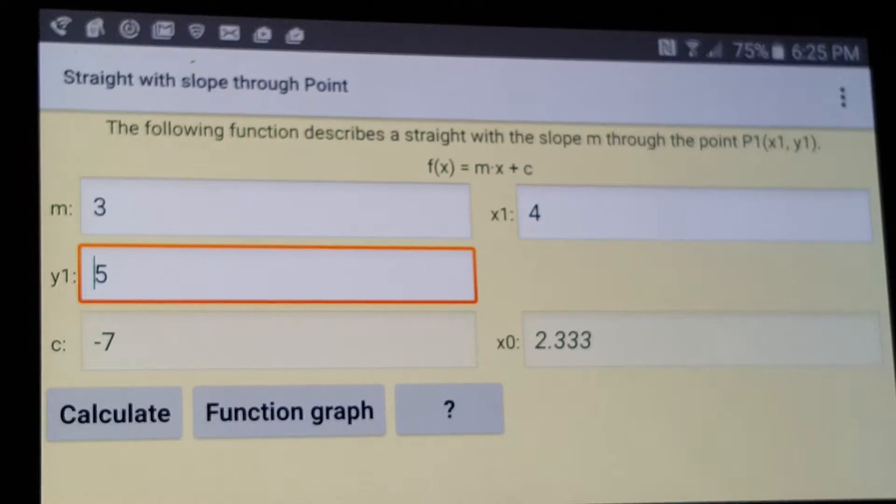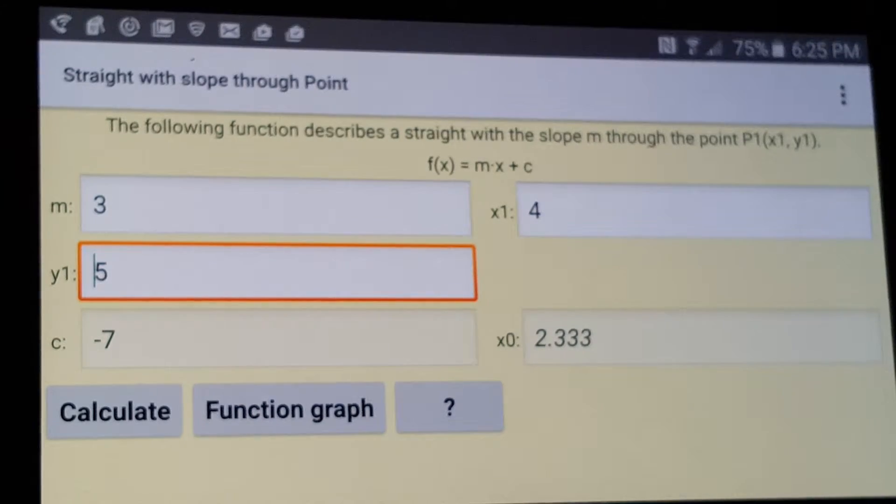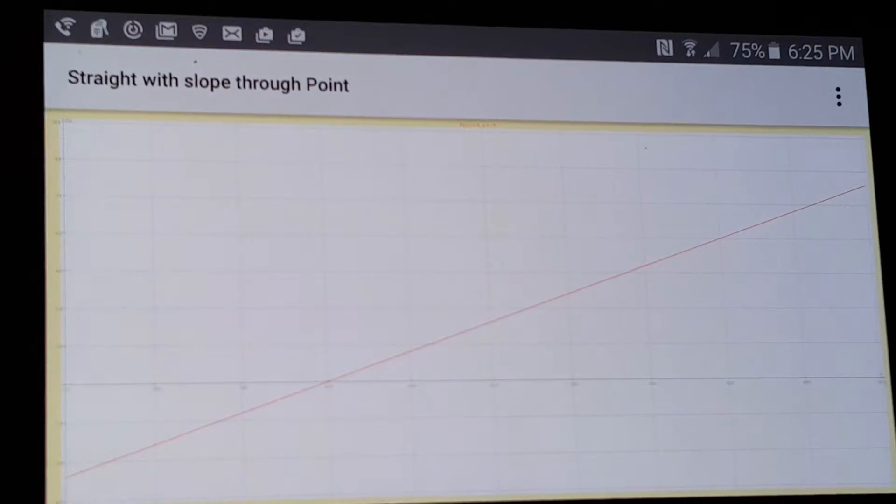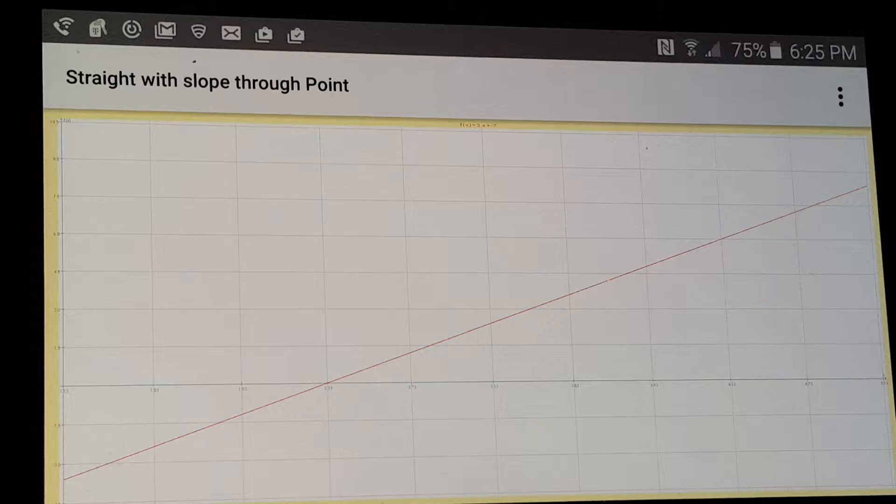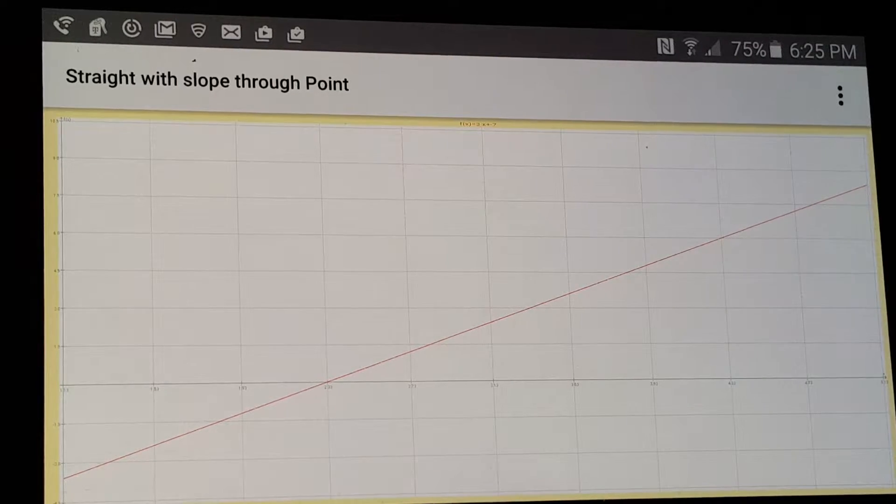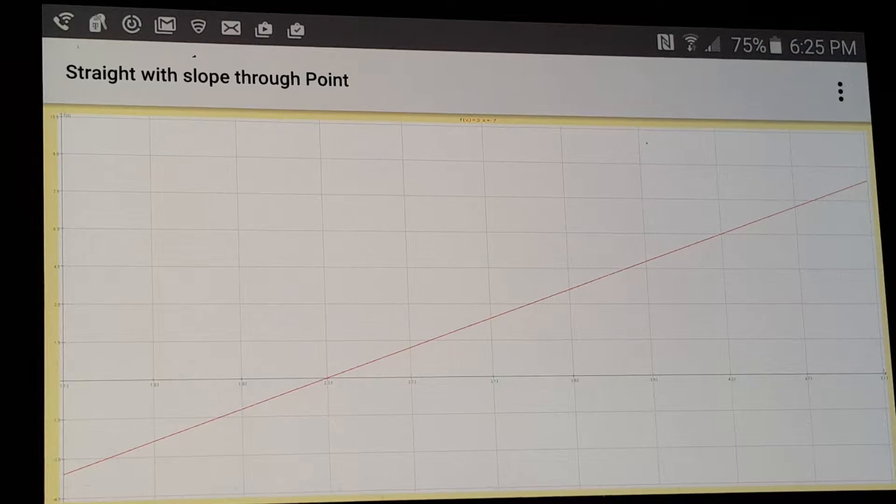Now if you want to graph this function, you're going to press the function graph key, and a graph will appear. And this line is a straight line. It goes through positive 4 on the x-axis and 0 on the y-axis.